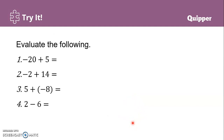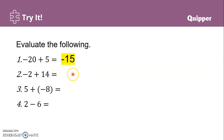Now evaluate the following. Negative 20 plus 5: negative and positive, different signs. We subtract: 20 minus 5 gives 15. Copy the sign of the larger absolute value, which is 20 — that's negative. Answer is negative 15. Next, negative 2 plus 14: different signs. Subtract: 14 minus 2 gives 12. The larger integer is 14, which is positive. Answer is positive 12.